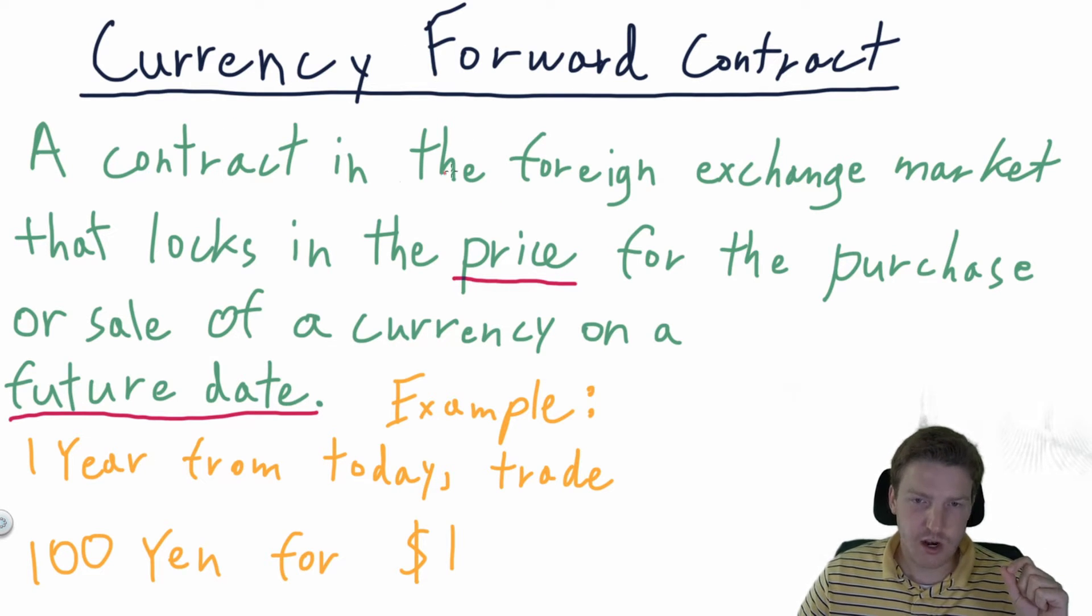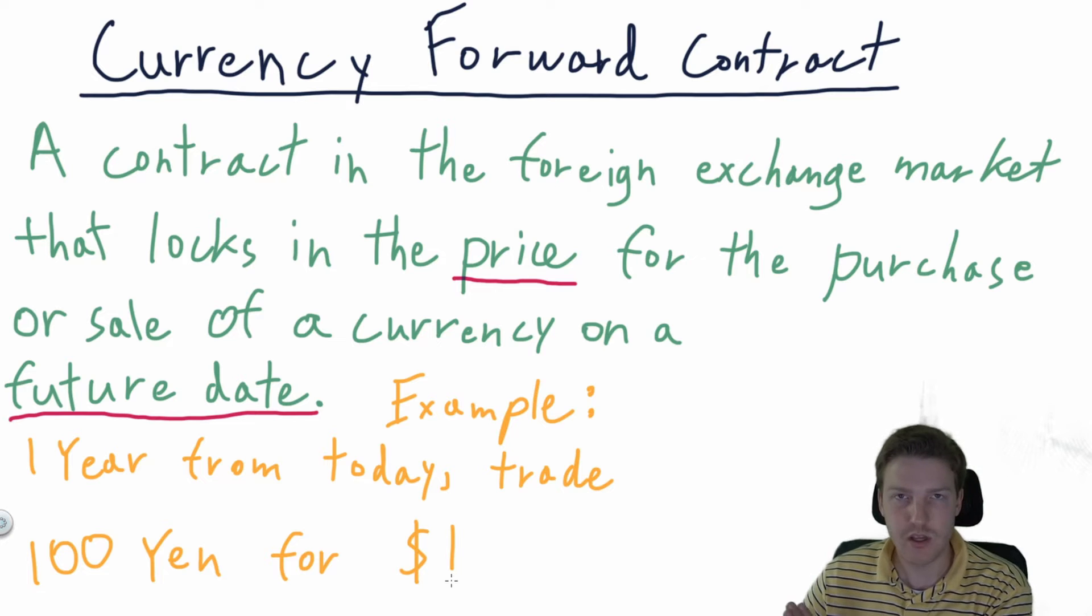This is a contract in the foreign exchange market that locks in the price for the purchase or sale of a currency on a future date. So an example of this would be let's say one year from today, I need to trade yen for US dollar. Well, I would go out and look at what are the forward prices in the market of yen for dollar and find that I can sign a contract that allows me to trade 100 yen for $1 one year from today.